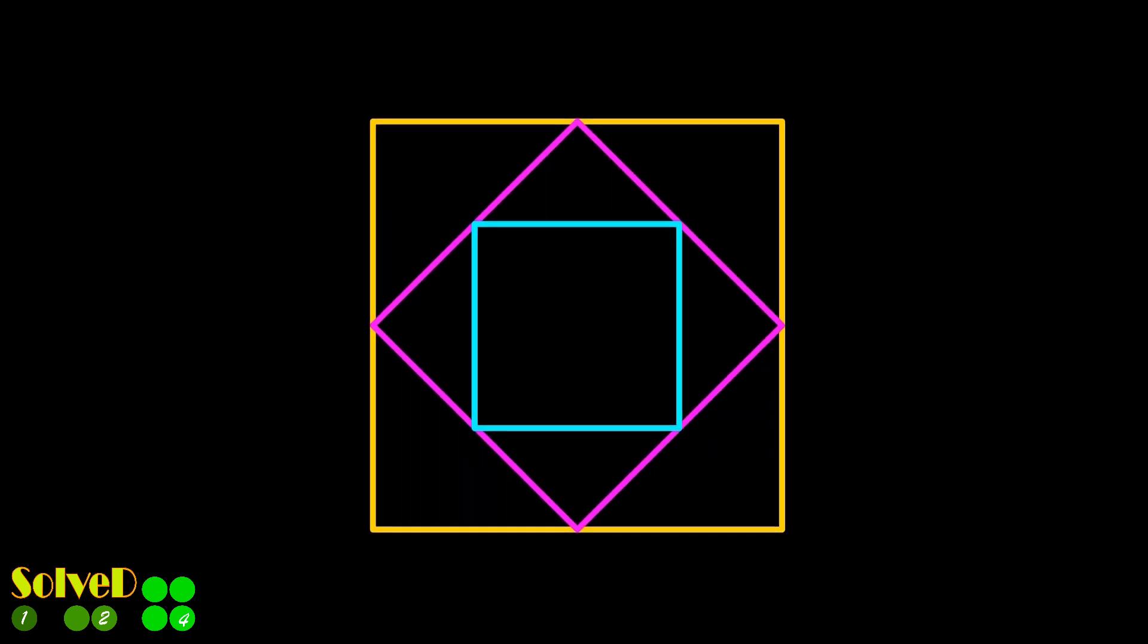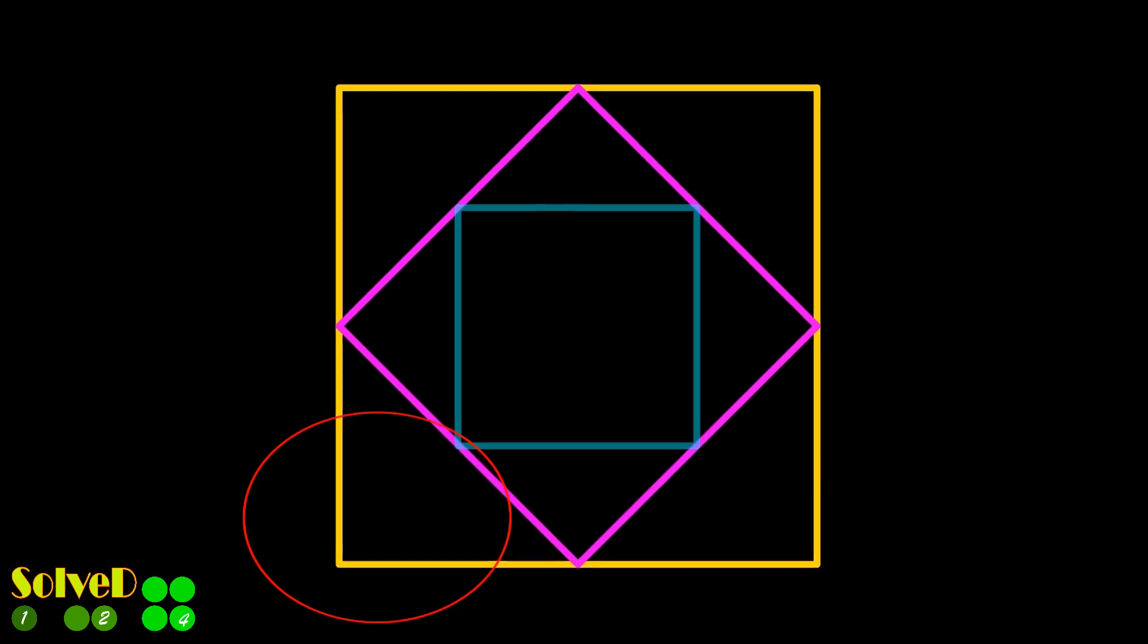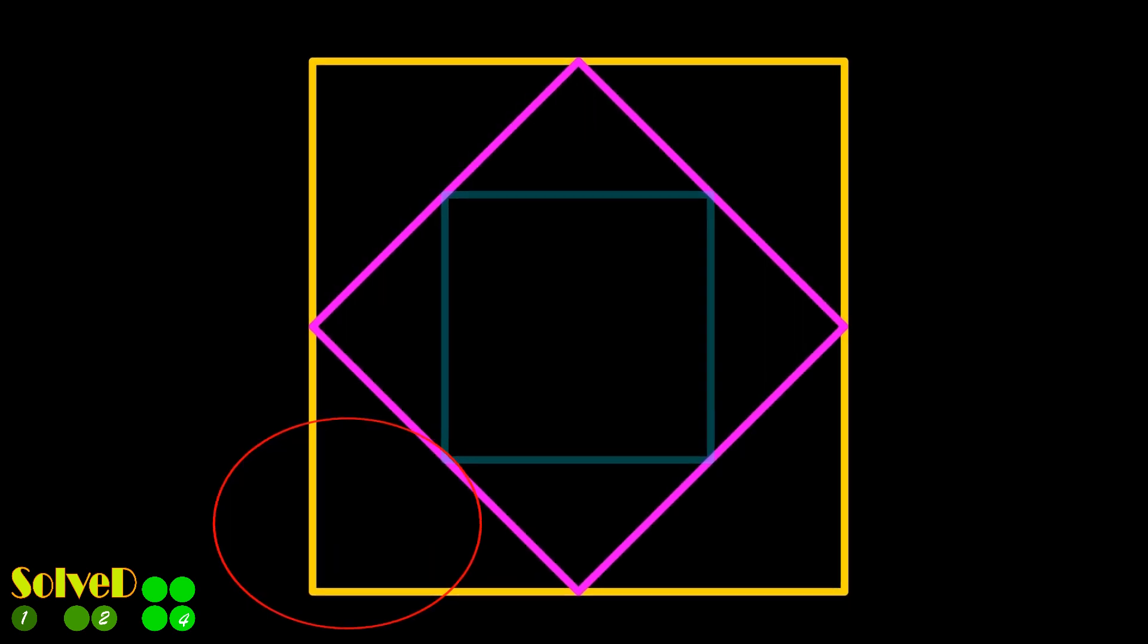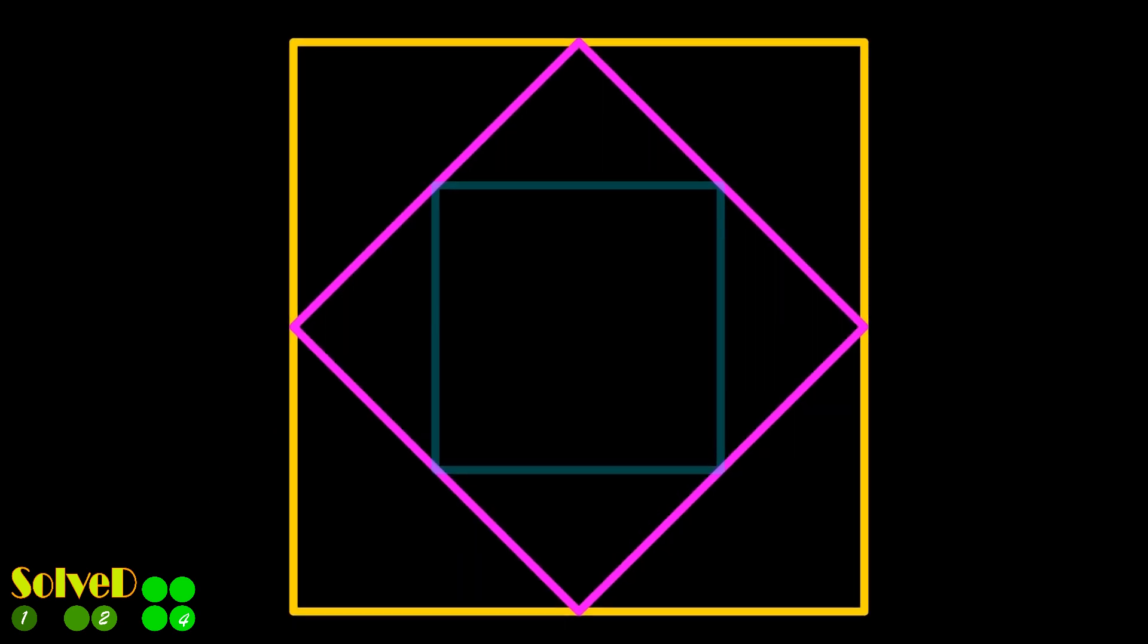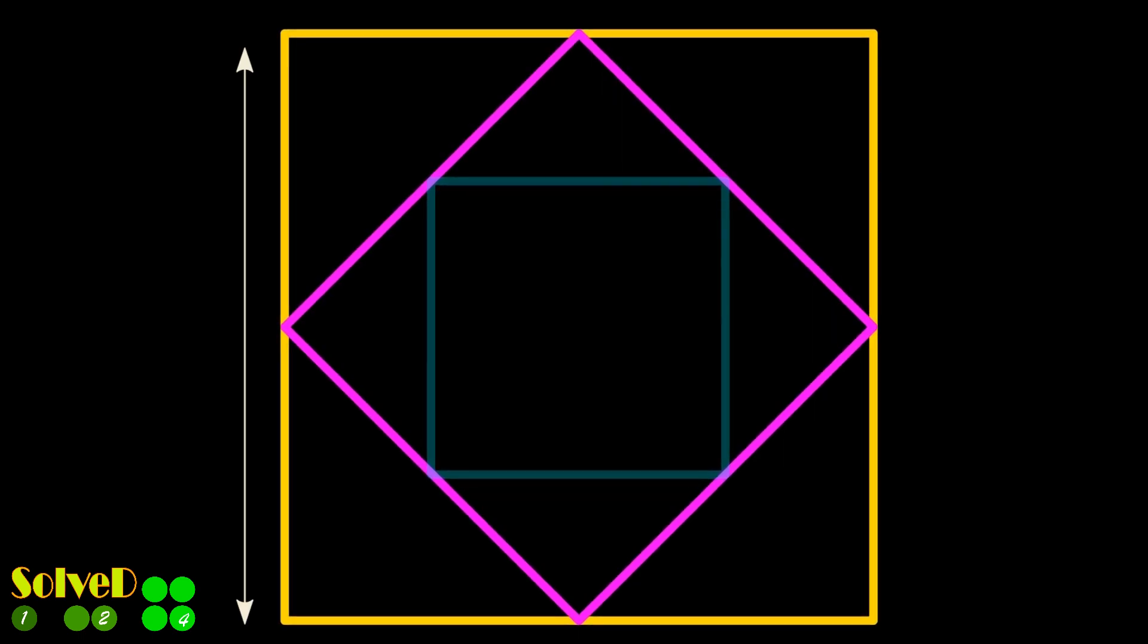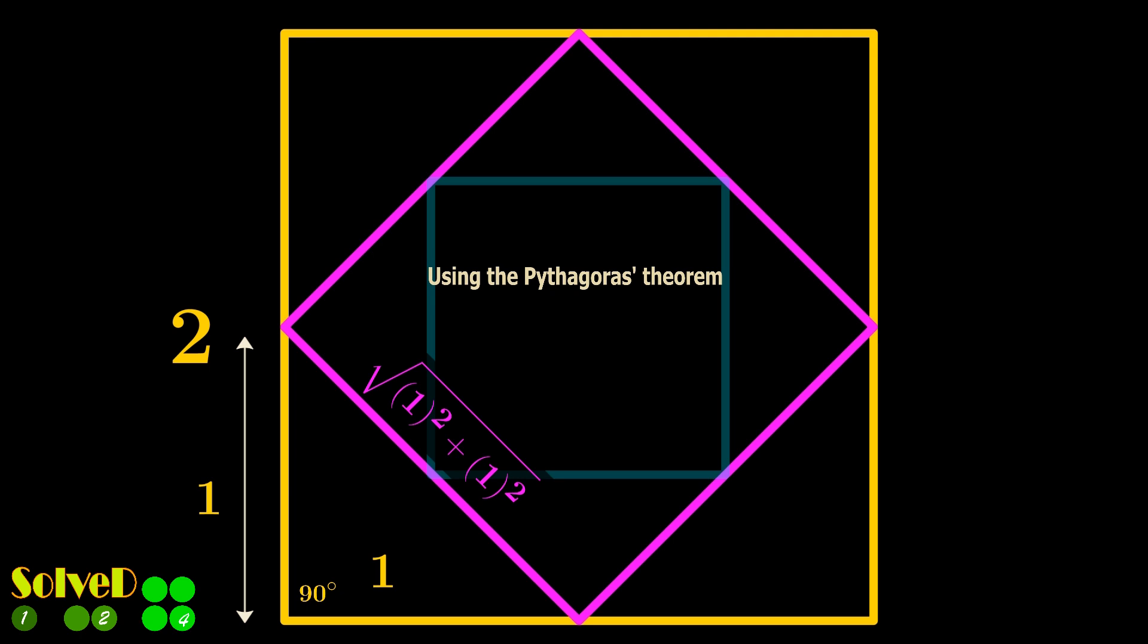Let's find the side length of the second square. Focus on this right-angled triangle. To find the side length, use the Pythagoras or Pythagorean theorem.